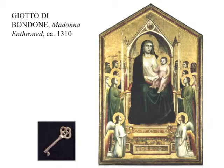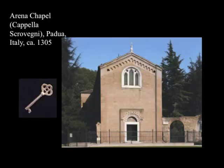Another interesting story about Giotto: supposedly Pope Boniface VIII had heard about Giotto's talent and wanted to commission him, but first wanted a sample of his work. He sent a messenger to Giotto asking him to prove he was as good as they said. Apparently Giotto simply took a piece of parchment, dipped a brush in red ink, and drew a perfect freehand circle, which he sent back to the Pope. And apparently that was enough.